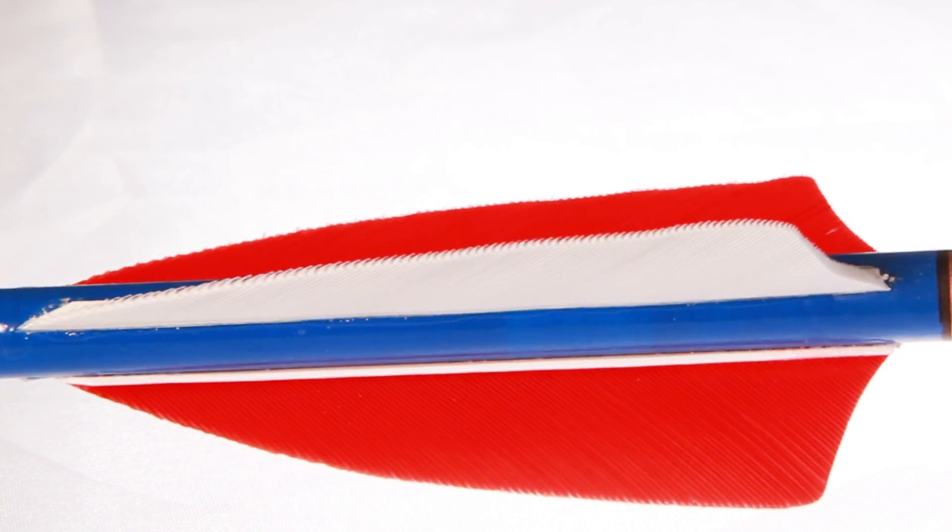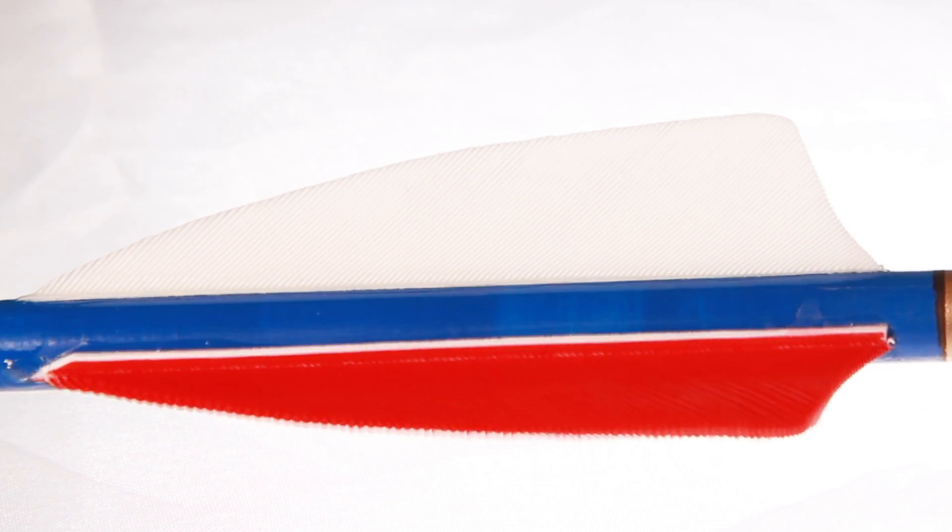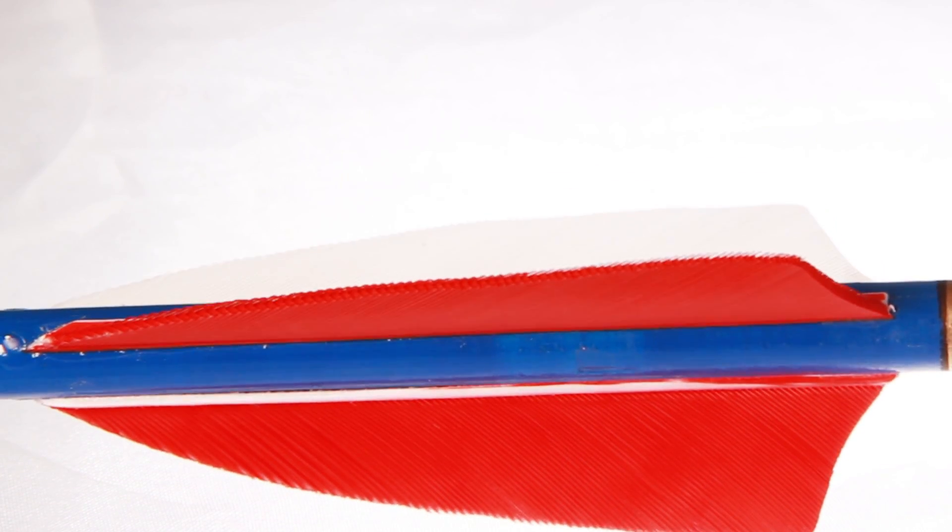The odd colored fletch is called the cock fletch. This allows us to orient the arrow correctly in the bow.